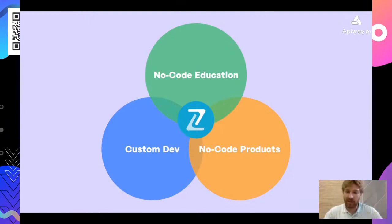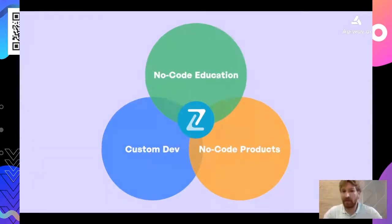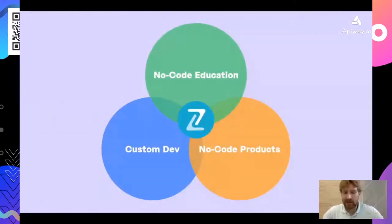To get to no-code products, you'd probably need to step through education and custom development first. And the reason they're all interconnected is that all three sides of the business power one another. A person comes in with an initial interest in education, gets a template, tinkles with it, then gets a custom development package, then buys another no-code product, and you may educate them further. Those three branches are self-sustaining on their own but also empower each other.